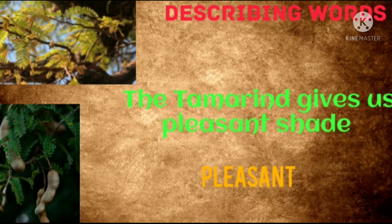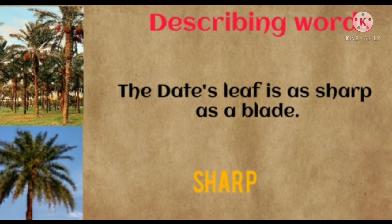The tamarind gives us pleasant shade. The tamarind has thick branches and dense leaves. How is the shade? It is pleasant and cool - you feel relaxed and happy in the shade. So 'pleasant' is the describing word for the tamarind's shade. Underline 'pleasant.'